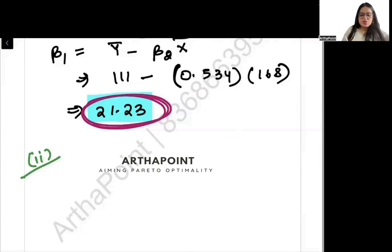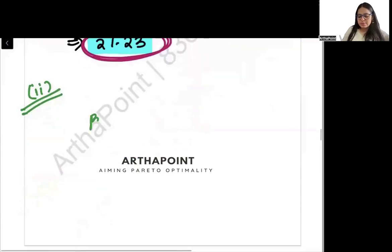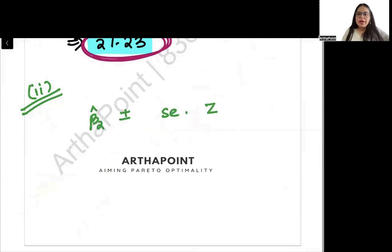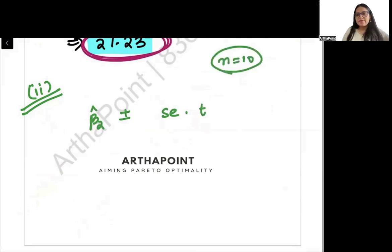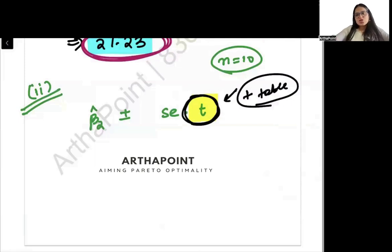Now let's look at the second part: establish a 95% confidence interval for beta_2. The confidence interval will be beta_2 hat plus or minus its standard error times the value of z or t. Since we have a small sample size of n = 10, we will use the t-distribution. Since the t-table is not given in the question, in the exam you will be provided a t-table to find the t-value.